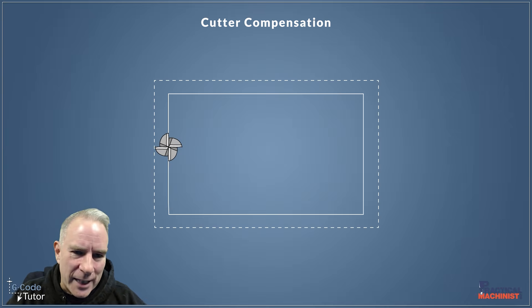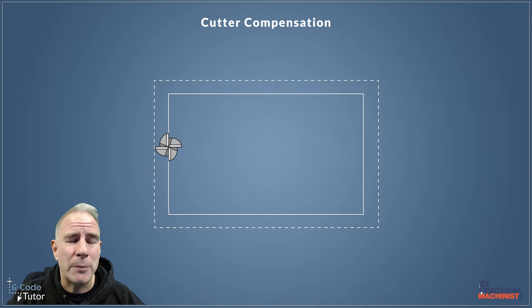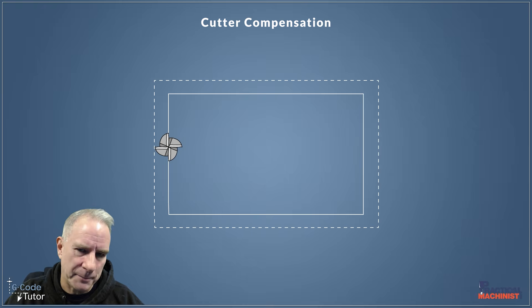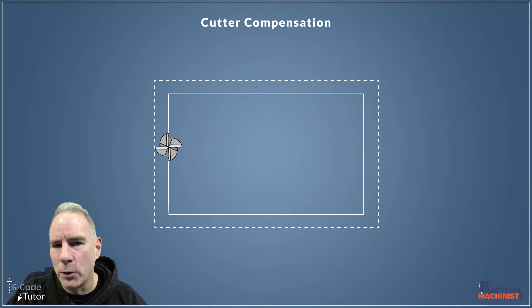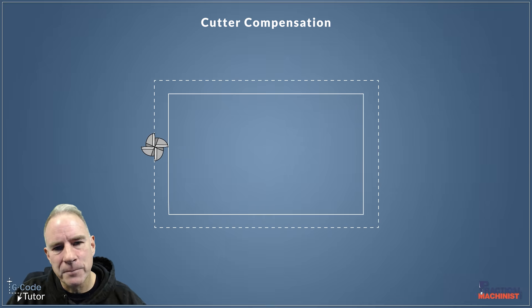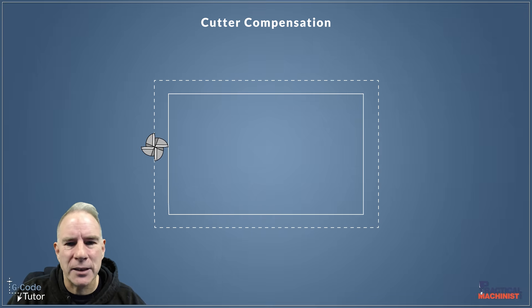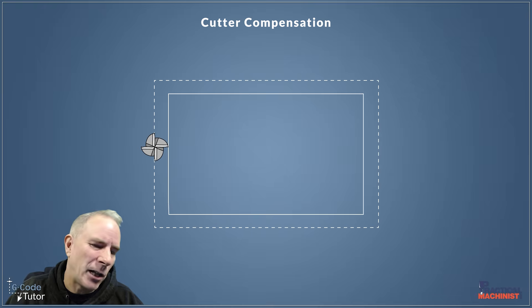Now, cutter compensation. If we program to the shape of the part we have the diameter of the tool to worry about, so the part is always going to be the radius of the tool undersize. So how do we get around that without programming bigger all the way around our parts? Well, for that we use cutter compensation. As you can see from this slide, our cutter moves to the outside of the part, so the cutting edge is cutting the programmed shape and the centerline of the tool is tracking around the outside.